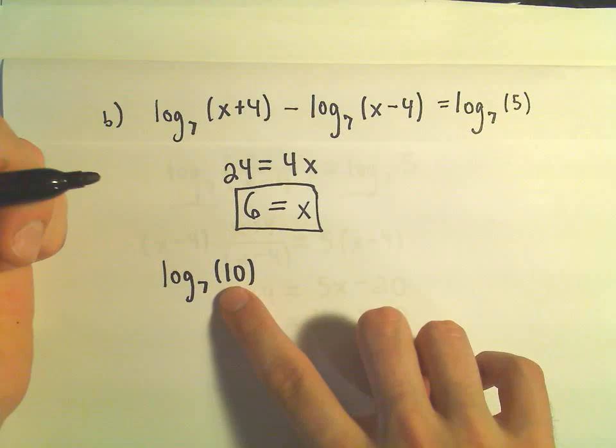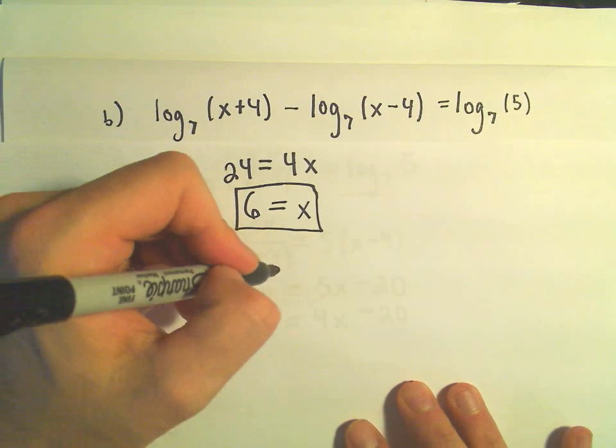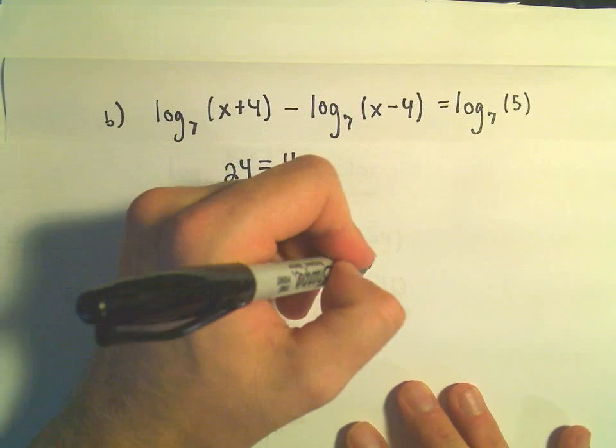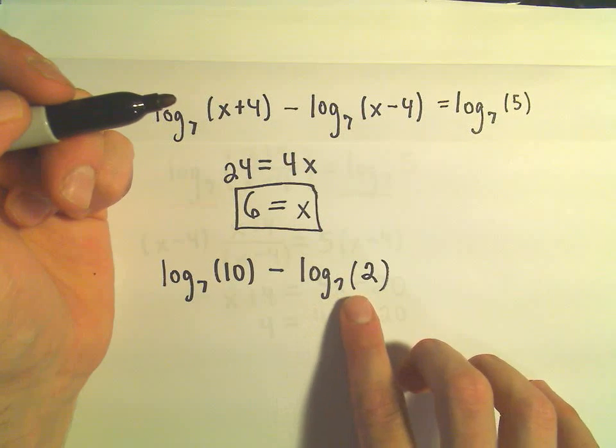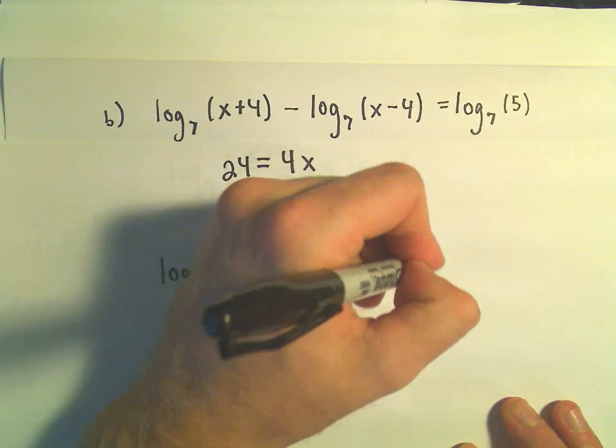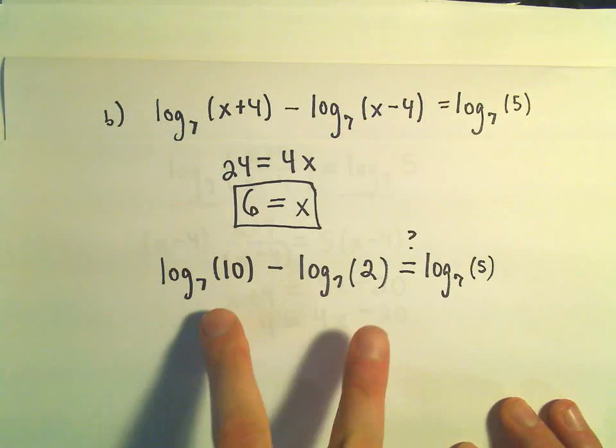Log base 7 of 10, that's a positive number, so that number we can evaluate. We would get log base 7 of 6 minus 4 would be 2. So that's still good, because we have a logarithm of a positive number. And does that equal log base 7 of 5?